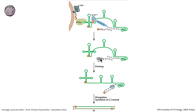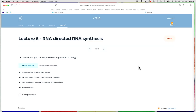Then VPg-UU comes in at the 3' end, with the two U's base-pairing with the poly-A. The polymerase uses that as a primer and starts extending, copying first a string of A's and then the heteropolymeric sequences until it makes a full-length minus strand. Then the same process occurs to make a plus strand.